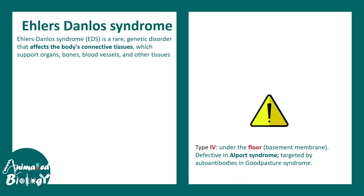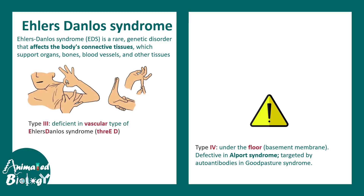Defects in collagen are associated with several disorders. One syndrome is Ehlers-Danlos syndrome, also known for an extremely stretchable or flexible body — the skin is so loose it can be picked up, and fingers are so flexible they can fold backwards. This happens due to a defect in collagen; type 3 collagen is specifically deficient in the vascular type of Ehlers-Danlos syndrome. Overall, collagen defects make tissues more flexible and less rigid.